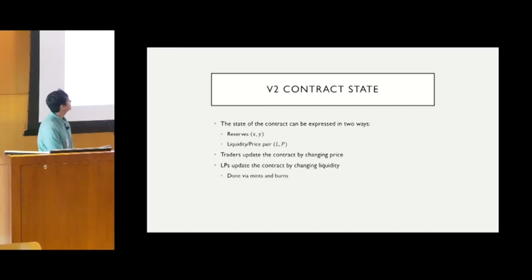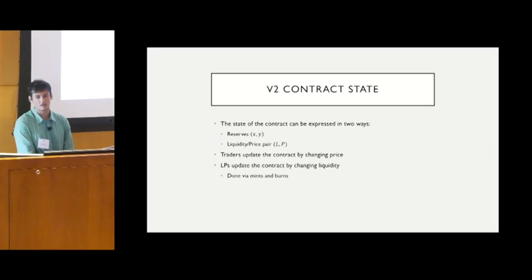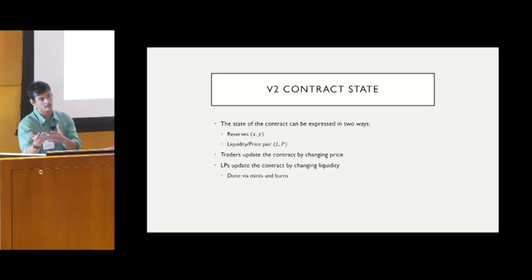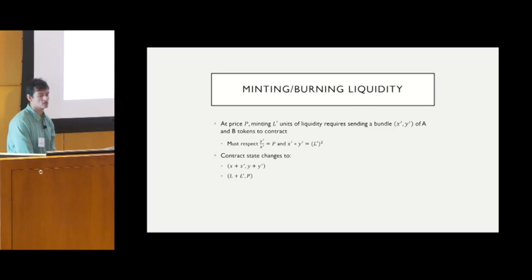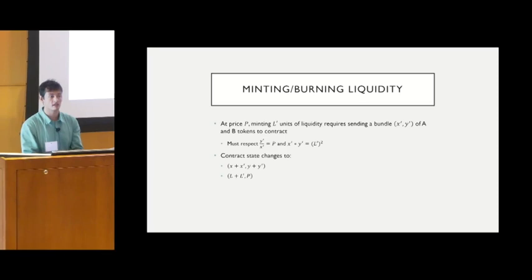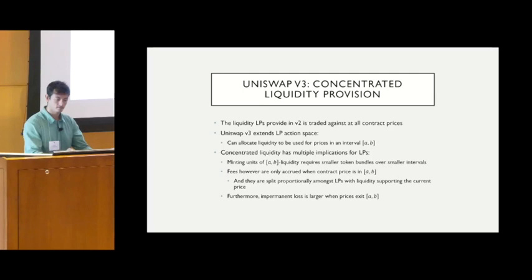The state of the V2 contract can be expressed both in terms of the reserves x and y, but also in terms of the liquidity in the contract and the given price at that point in time. Traders move the price along the curve, while liquidity providers — the agents we focus on — add and remove liquidity. In V2, there's no functionality for deciding where liquidity goes; it's simply added and taken away via mints and burns according to specific functional equations, where bundles of tokens are sent to or taken from the contract.